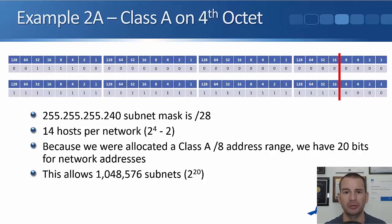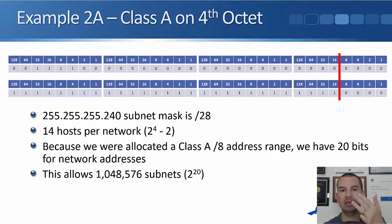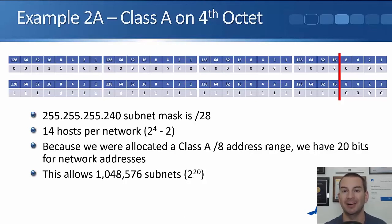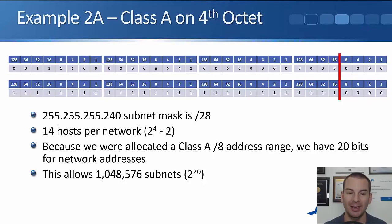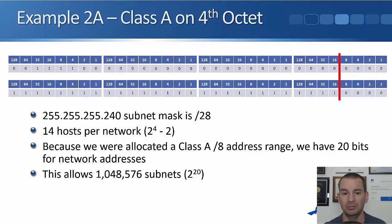For our example with a /28, we put the line in and we can see that we've got four bits for our host addressing. So that's 2 to the power of 4 is 16, minus 2 gives us 14 hosts per network. Because we were allocated a class A /8, we're going to have 20 bits for the network addresses — the difference between the default /8 and the /28 we're using is 20 bits. So 2 to the power of 20 works out at a little over 1 million subnets.